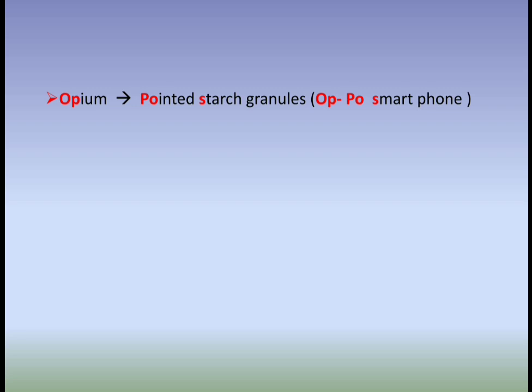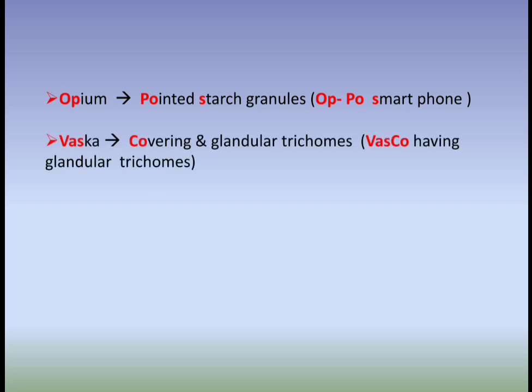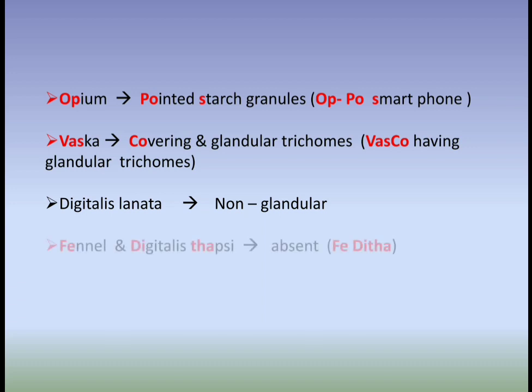Vasaka has both covering and glandular trichomes. Digitalis lanata shows non-glandular trichomes. Fennel and Digitalis thaps do not have trichomes — trichomes are absent in these. The trick to remember is 'Fadita' for the absent trichomes group.